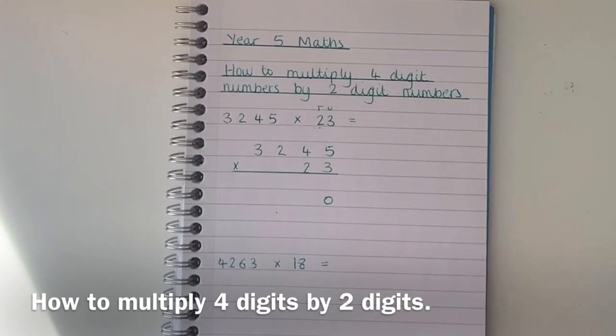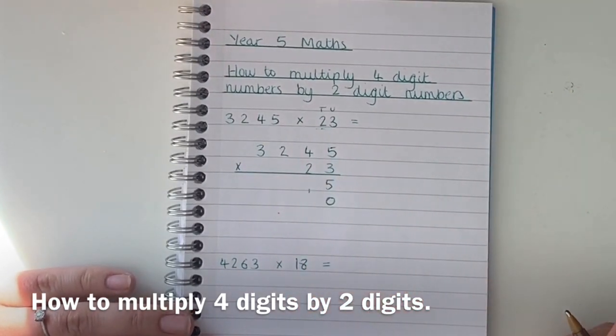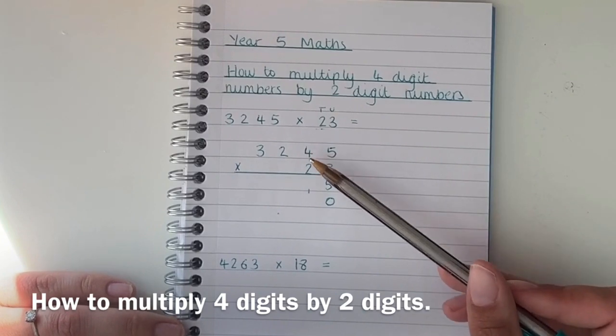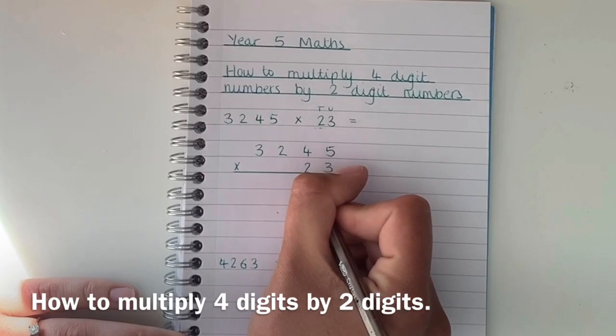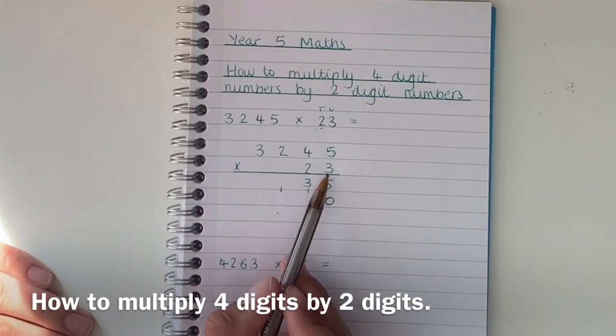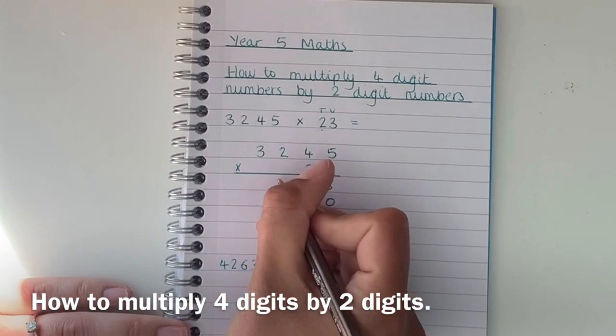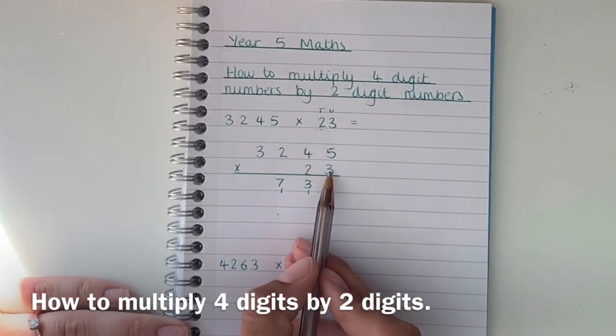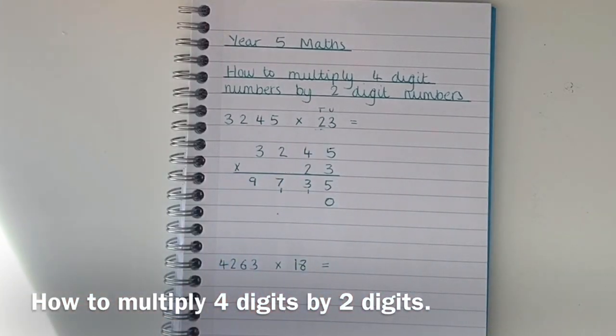So 5 times 3 is 15. I'm going to put my 5 down from that number and carry the 10 over. 4 times 3 would be 12. Add that 1 would be 13. Remember to carry the numbers over if you need to. 3 times 2 is 6. Add the 1 would be 7. And then 3 times 3 would be 9. So my answer to 3245 multiplied by 3 is 9735.